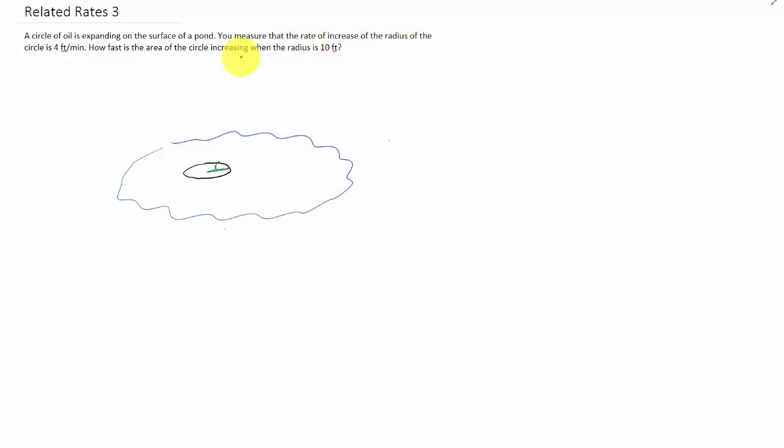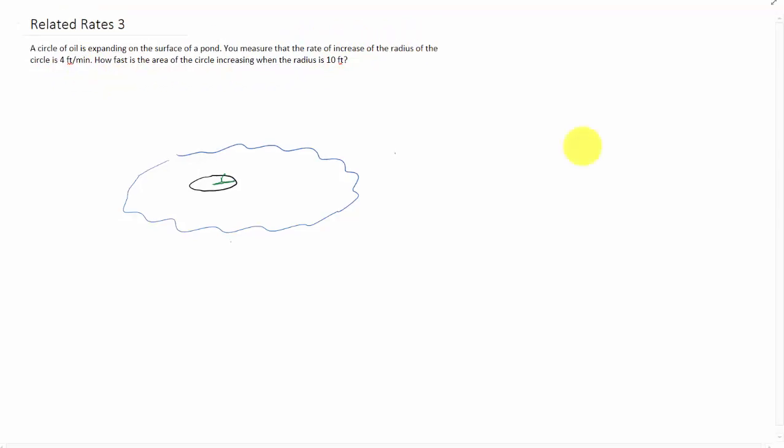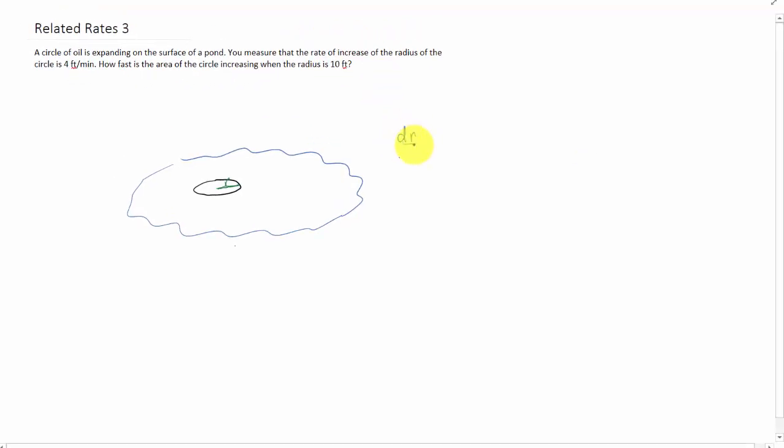Well, the rate of increase of the radius is 4 feet per minute. So in terms of calculus notation, that's dr/dt equals 4. What do we need to find? We need to find how fast the area of the circle is increasing.